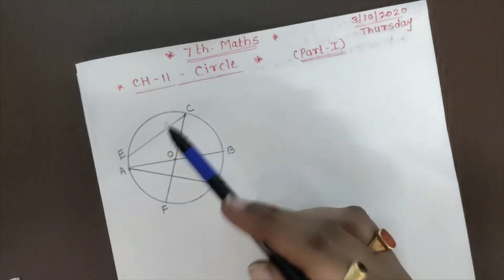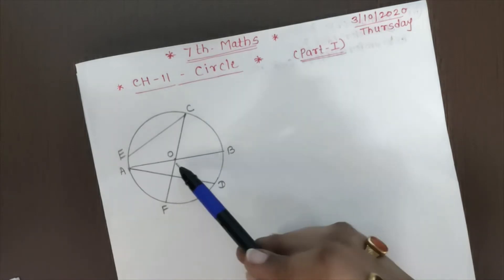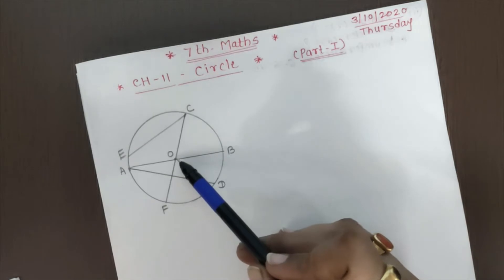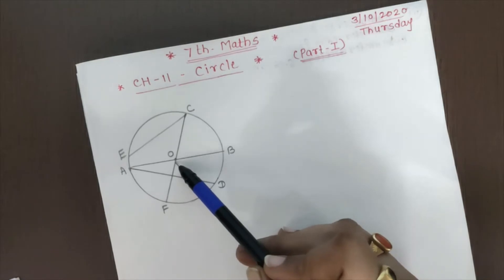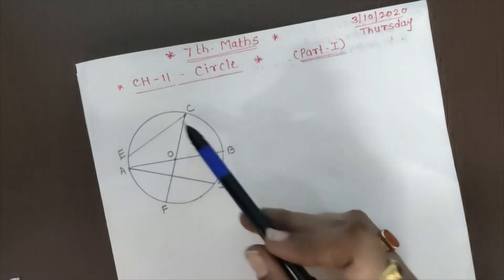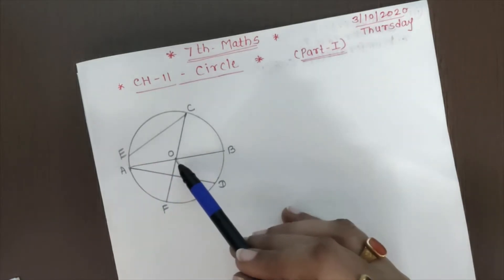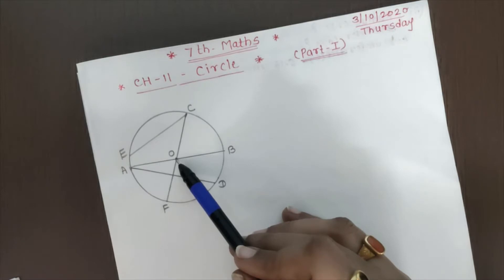Now see, in the figure of this circle, this point O, so this point O is called what is that? That is the center of the circle. This is the term which is related to circle. Then this is your center of circle, that is point O.